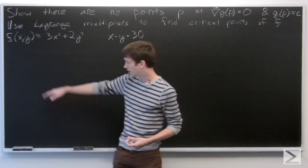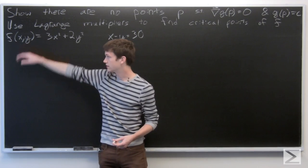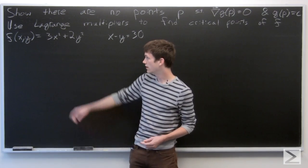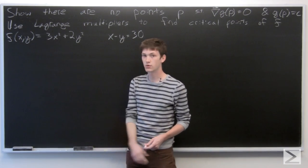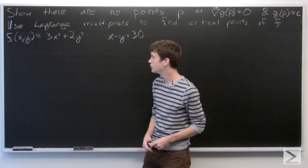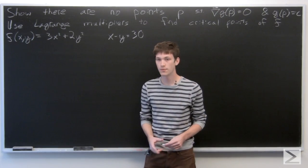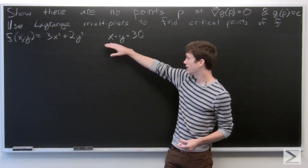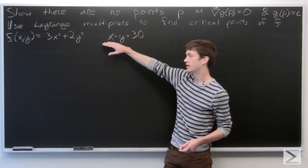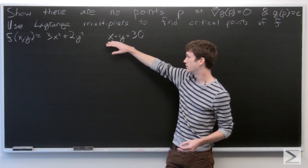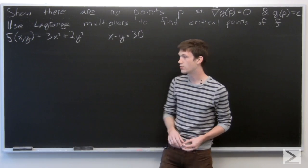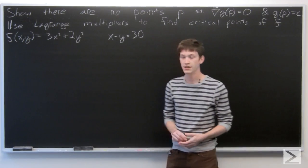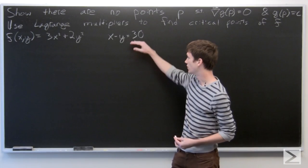We're given that f is a function f(x, y) = 3x² + 2y². And our constraint is g(x, y) = x minus y, and we're on the level set where g is equal to 30.